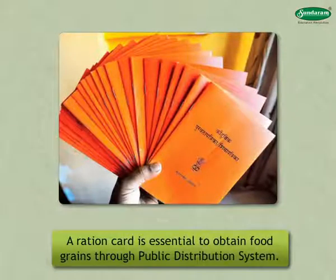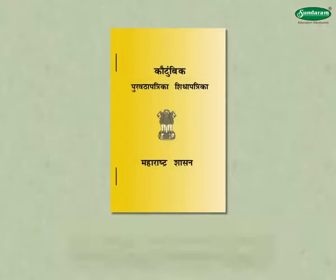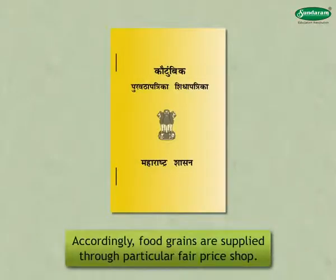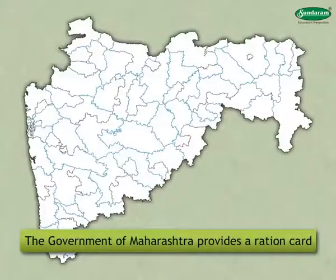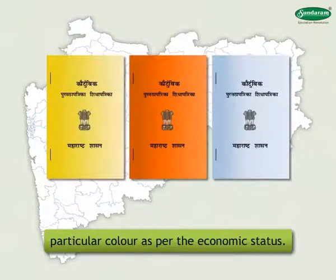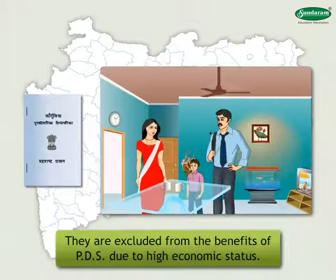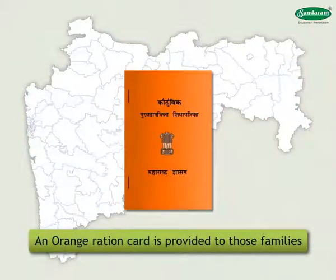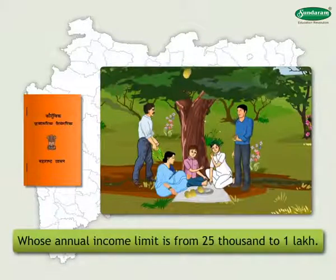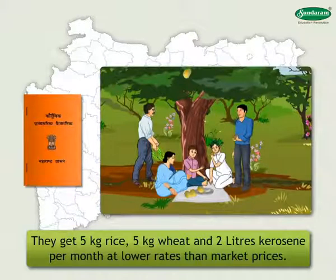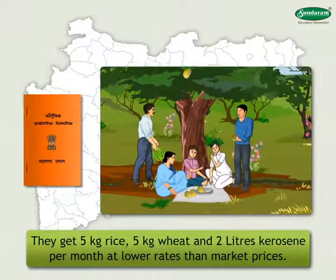A ration card is essential to obtain food grains through the public distribution system. It has a reference of the number of family members, and accordingly food grains are supplied through a particular fair price shop. The government of Maharashtra provides a ration card of a particular color as per economic status. Generally, a white ration card is given to families whose annual income is more than rupees one lakh; they are excluded from the benefits of PDS. An orange ration card is provided to families whose annual income is from rupees 25,000 to 1 lakh — they get 5 kilograms rice, 5 kilograms wheat and 2 liters kerosene per month at lower than market rates.